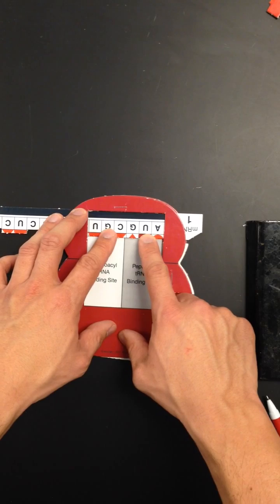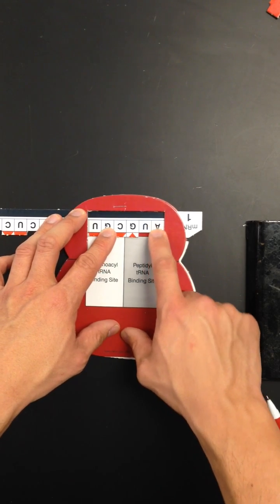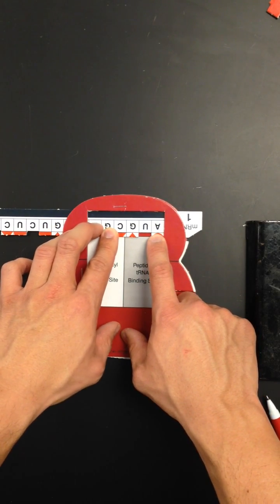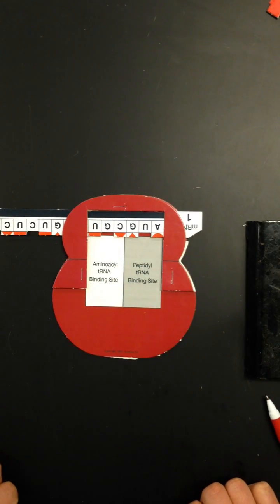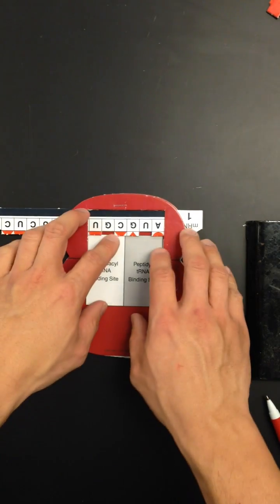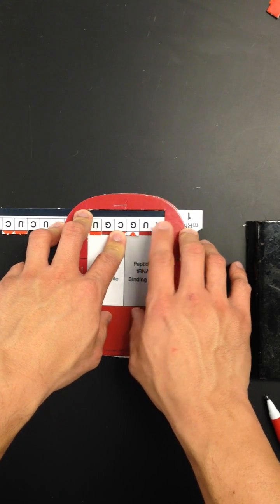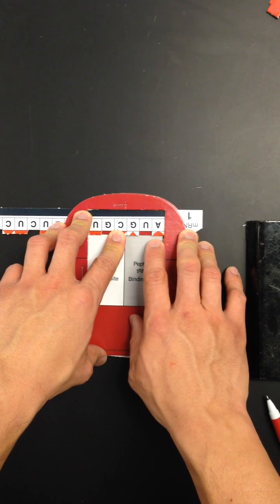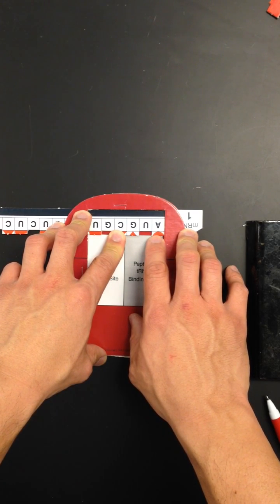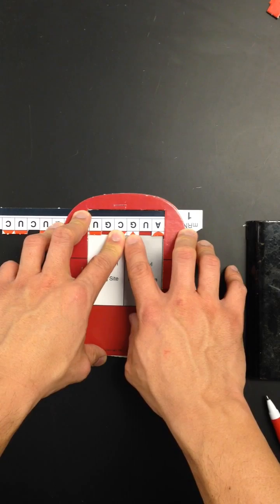Once you put in your messenger RNA into your ribosome, you want to find what's called the anticodon. The anticodon is the matching code that's found on the transfer RNA. Since my first three bases are AUG, I need to find the anticodon UAC.